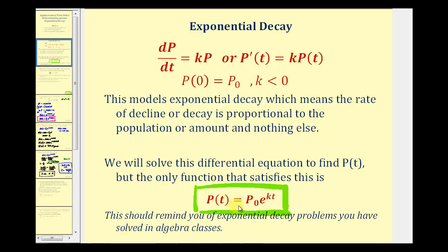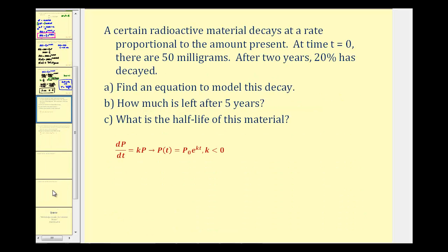Now that we know this function satisfies the differential equation to model exponential decay, we're going to use this to solve a second problem. A certain radioactive material decays at a rate proportional to the amount present. At time t equals zero, there are 50 milligrams. After two years, 20 percent has decayed. We want to find an equation to model this decay, how much is left after five years, and what is the half-life of this material.